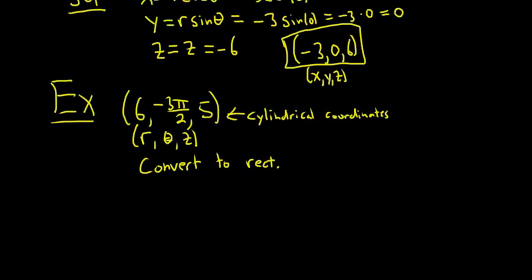Solution. All right, so the formulas are the same as before. So x equals r cosine theta, y equals r sine theta, and z equals z.